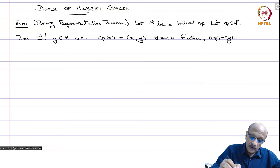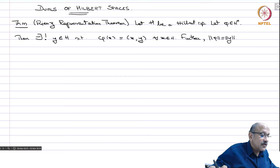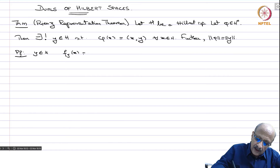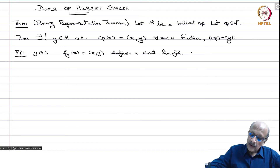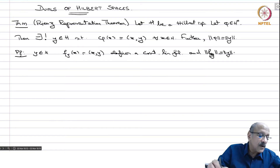We already saw that if you have y in H, then f sub y given by x maps to the inner product x,y gives you a linear functional whose norm equals the norm of the vector. Now we say that every linear functional occurs in this fashion. So, proof: if y is in H, then f_y(x) = inner product x,y defines a continuous linear functional, and norm of f_y equals norm of y by the Cauchy-Schwarz inequality. This we have already seen in an example.